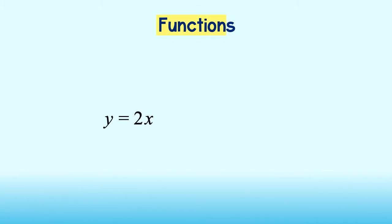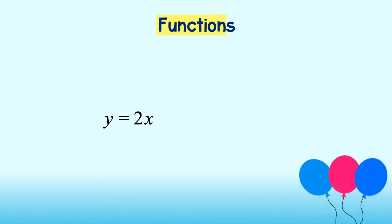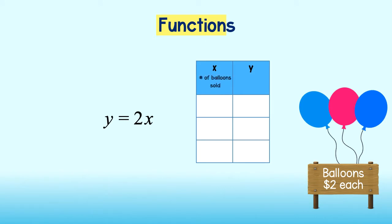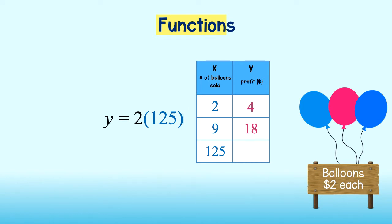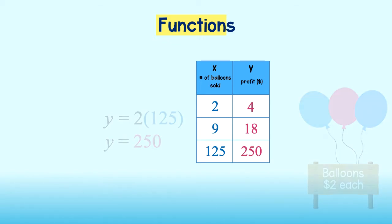Take a look at this equation. It represents the amount of money I would make from selling balloons for $2 each, where x represents the number of balloons sold and y represents my profit. For example, if I sold 2 balloons, I could input 2 into my equation to determine that I would make $4. How much would I make selling 9 balloons? I just input 9 to determine a profit of $18. If I sold 125 balloons, I can input that to see a profit of $250. I could continue this for any number of balloons.